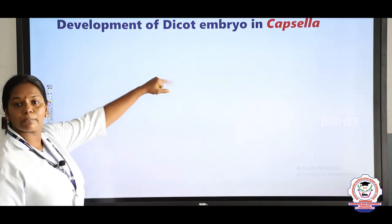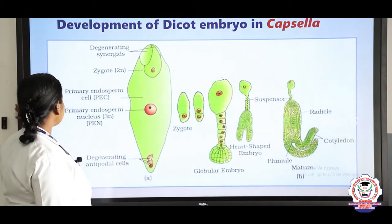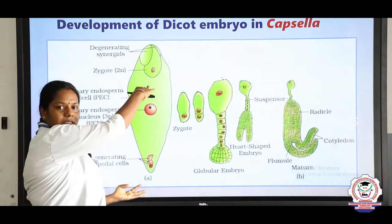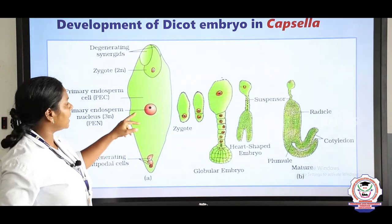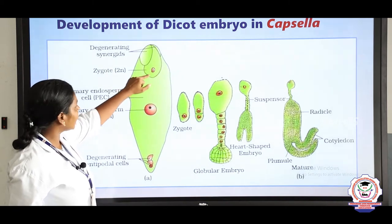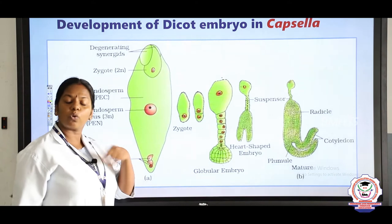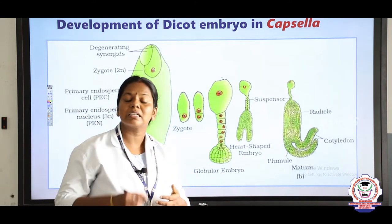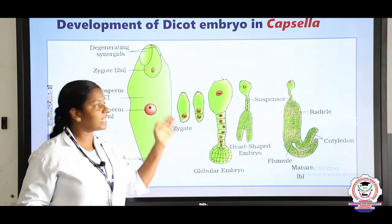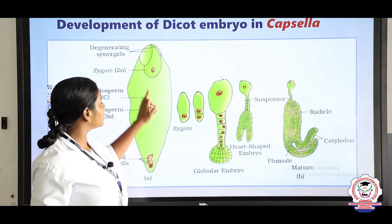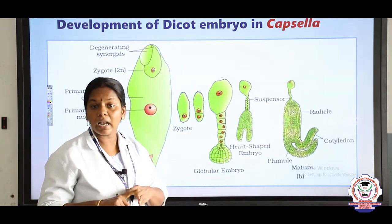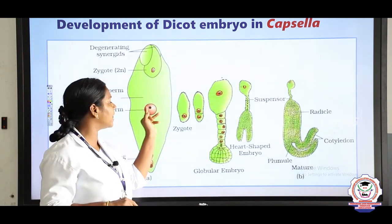This is the diagram showing development of the dicot embryo in Capsella. This is the embryo sac of the Capsella plant. We can see the primary endosperm nucleus, the zygote, synergids, and antipodals. As we studied in the last class, the synergids and antipodals get degenerated, endosperm division takes place, and then the zygote divides. We studied nuclear, cellular, helobial, and ruminate types of endosperm.